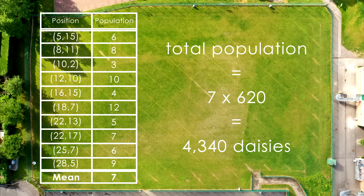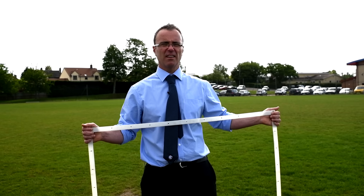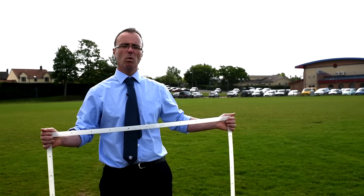You can use this method of random sampling to compare population sizes in different areas, or even repeat this for the same area at different times. However, there is another way of using a quadrat that allows you to observe how population density varies between two points within an area. For this, we are going to use a transect and a quadrat.